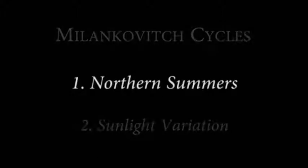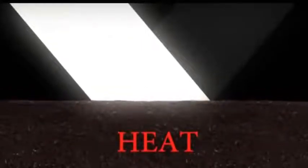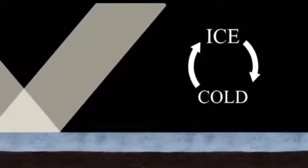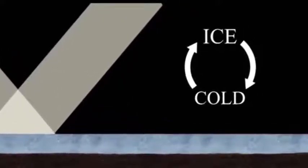Why are the northern latitudes so important? It's because of ice. When sunlight hits the ground, most of the energy is absorbed as heat. But if the ground is covered in ice, most of the light reflects away, because ice is white. This creates a positive feedback loop. Ice forms when it's cold, but ice also reflects light, making it colder, which forms more ice.